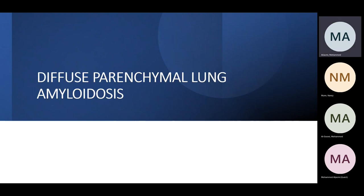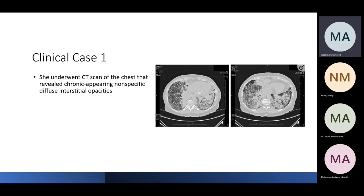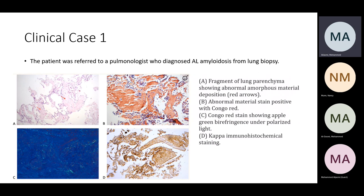We'll start with diffuse parenchymal lung amyloidosis using a clinical case. A 75-year-old female presented in 2017 with progressive shortness of breath with minimal exertion. Her past medical history was significant for cystic bullous disease of the lung, breast cancer status post-lumpectomy, cervical cancer status post-hysterectomy, and a smoking history. A CT scan was performed showing chronic-appearing, non-specific diffuse interstitial opacity with interstitial thickening and some consolidations. She was referred to pulmonology, who decided to perform a lung biopsy.